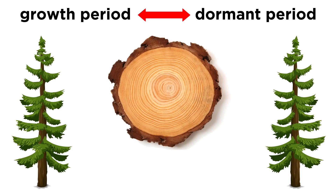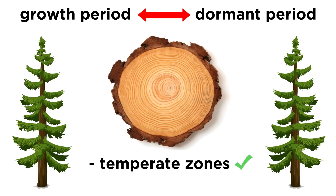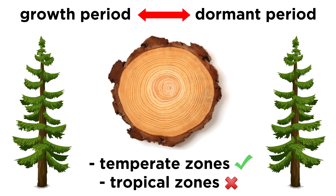It's important to note that tree rings form in forests that have an annual cycle consisting of a growth period followed by a dormant period. Such patterns are common in temperate zones and are entirely or partially absent in tropical zones.